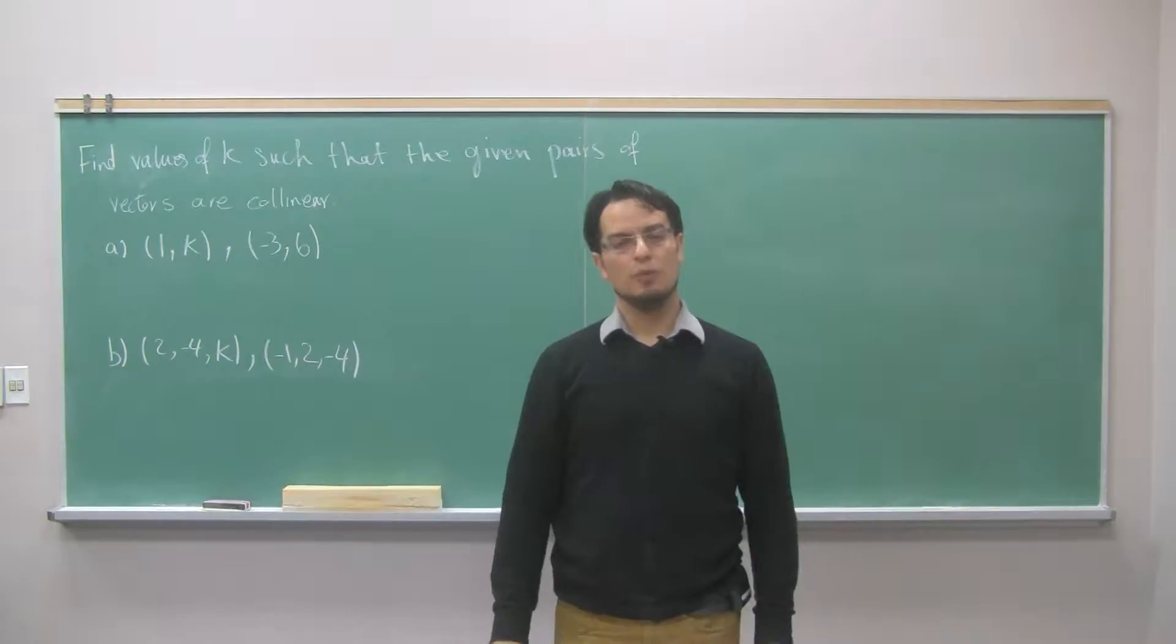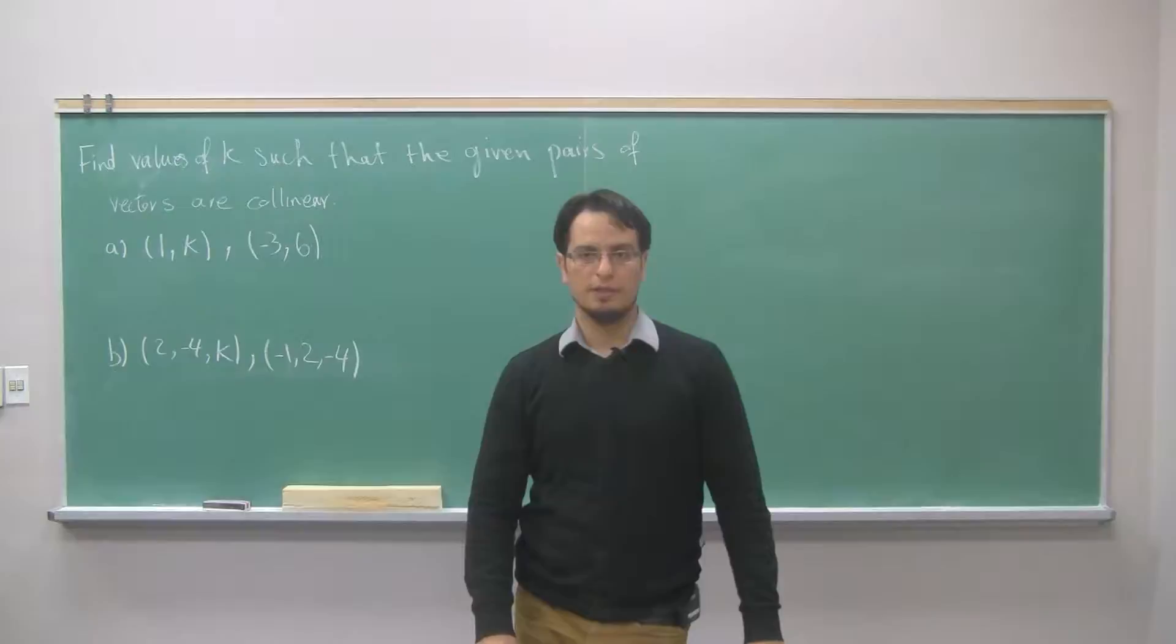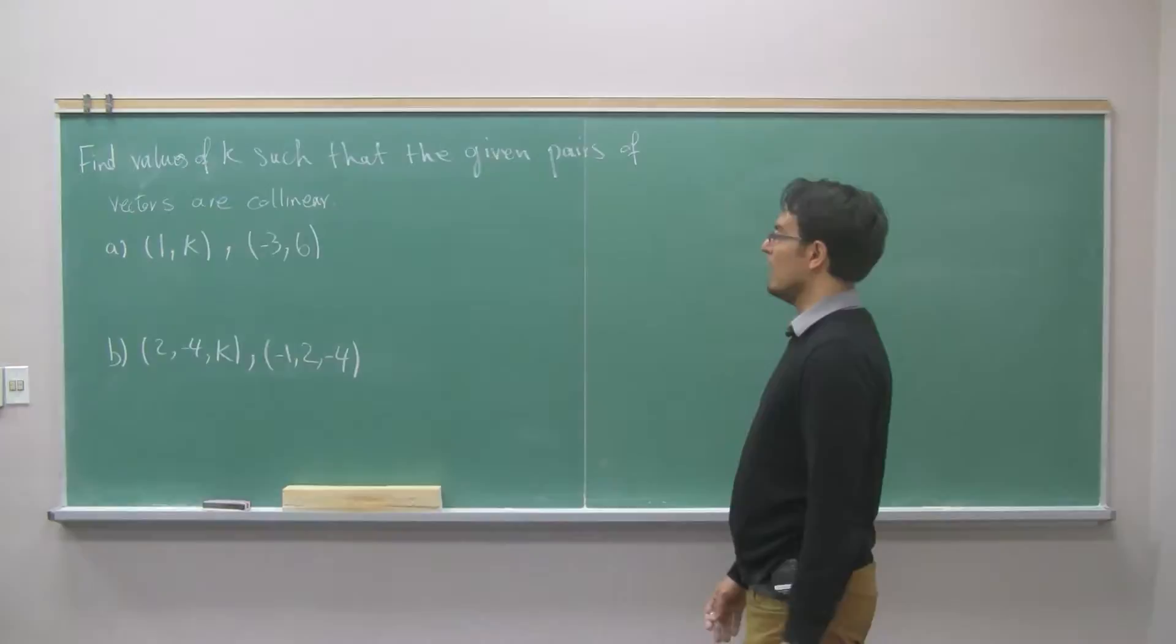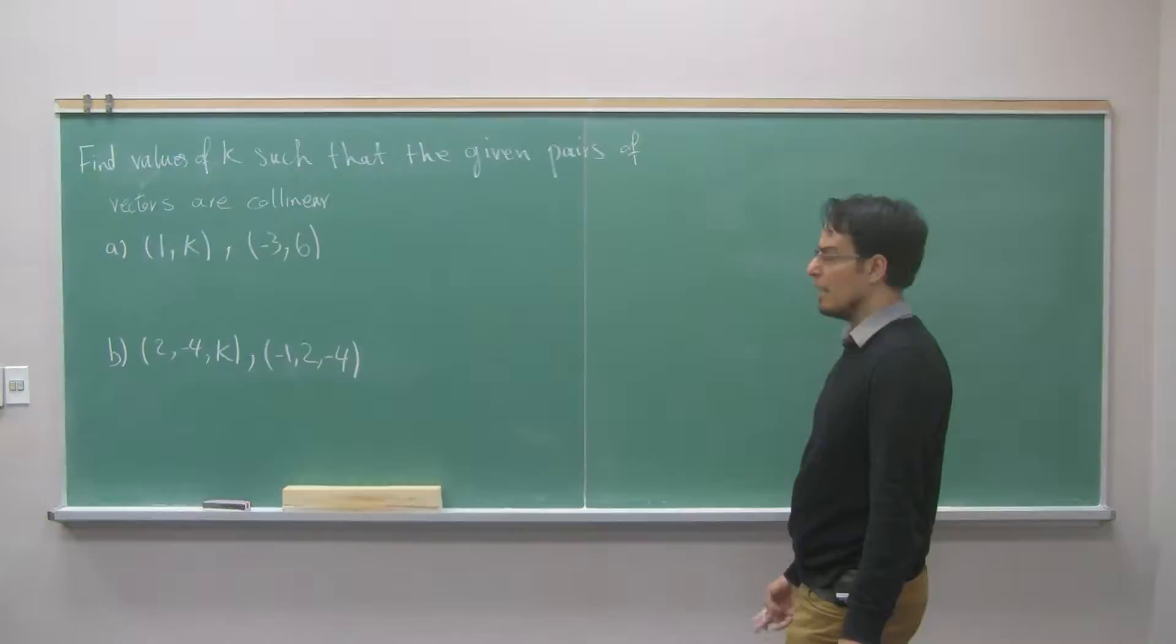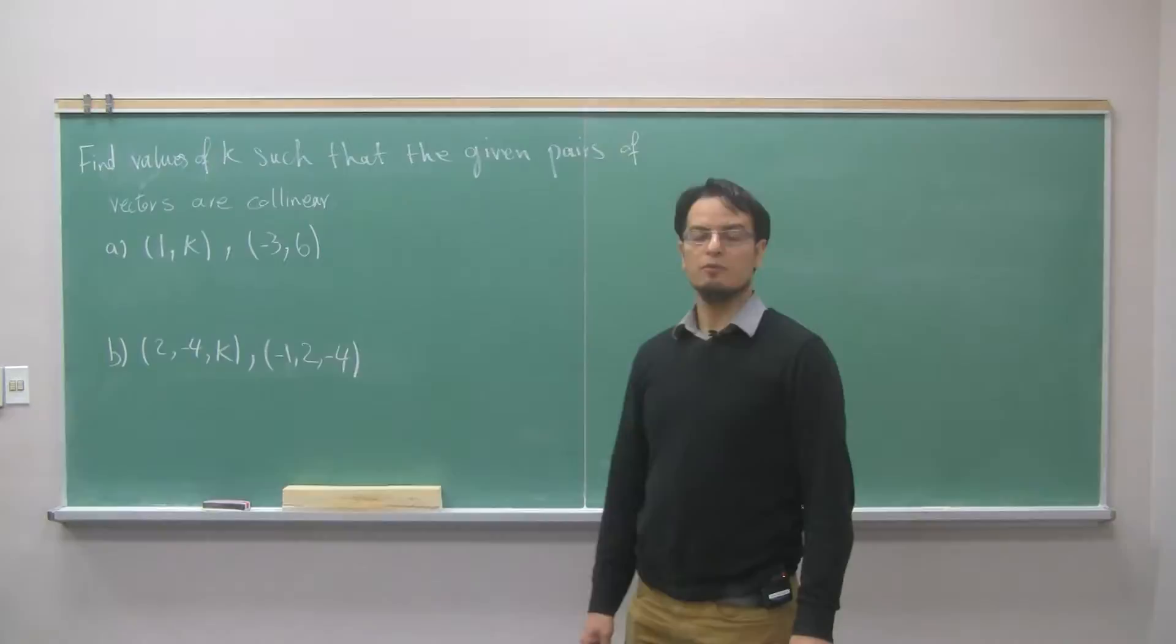Hello, everyone. In this lab tube, I will do an example related to collinear vectors. The example asks to find values of k such that the given pairs of vectors are collinear. I have two pairs, one in R2, one in R3, and we can have similar questions in Rm in general.